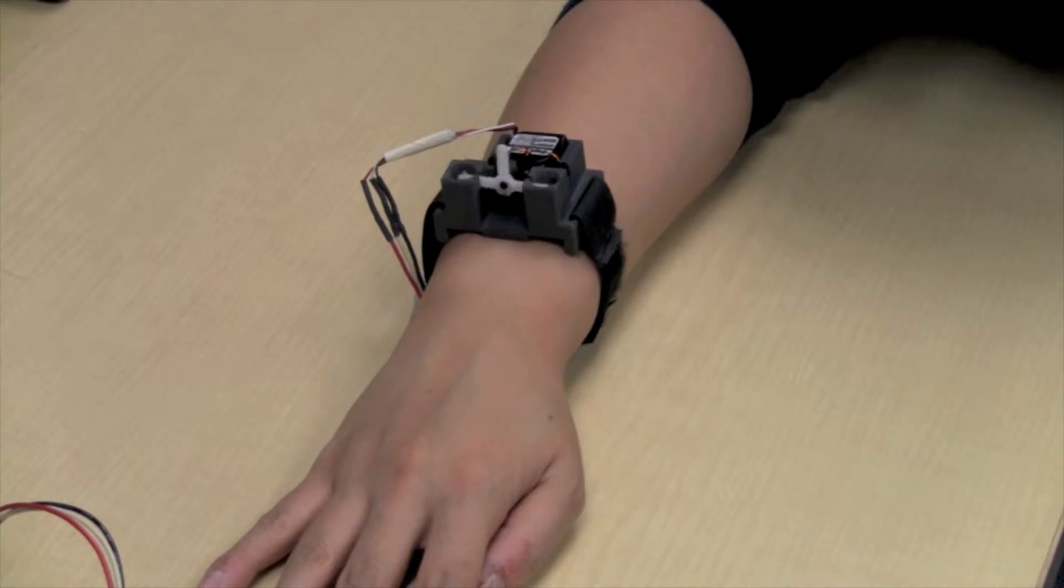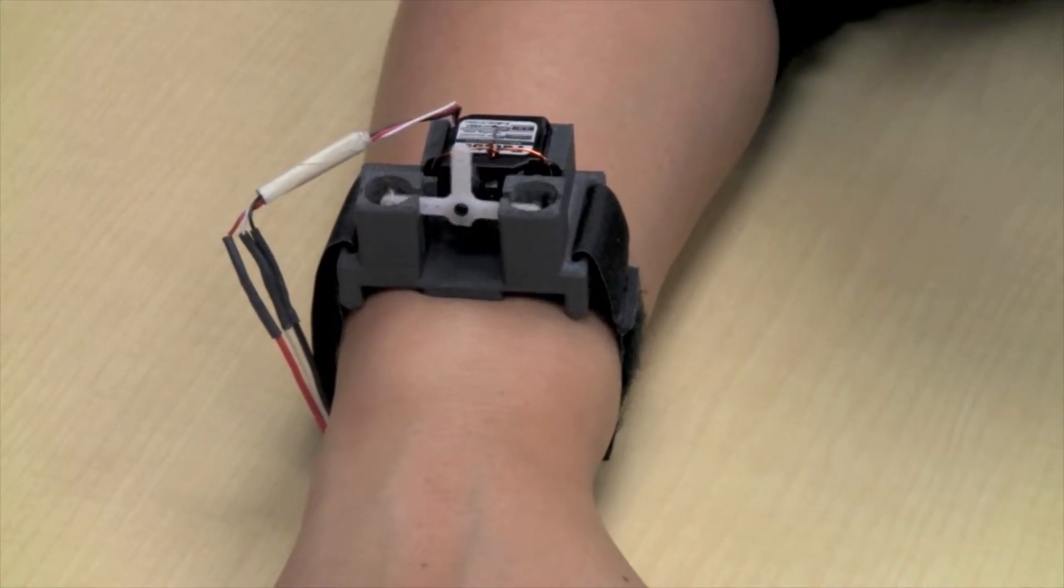A crank slider linkage on the tapper converts the rotational motion of the servo to follow the linear tapping motion.